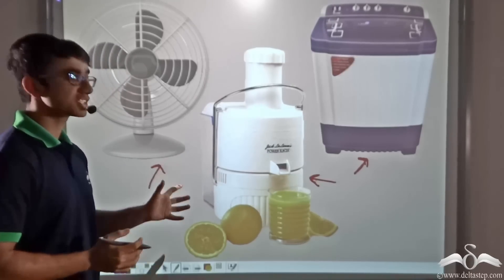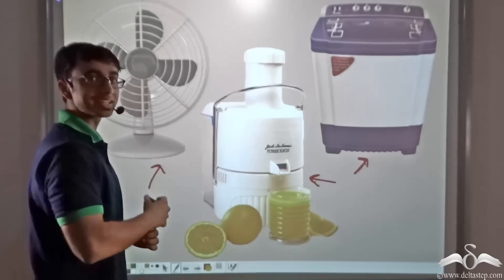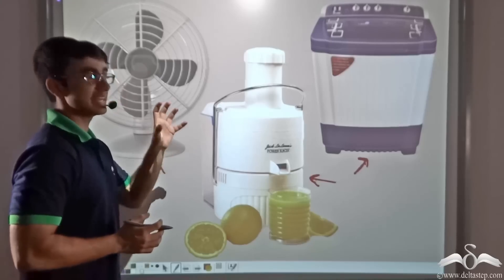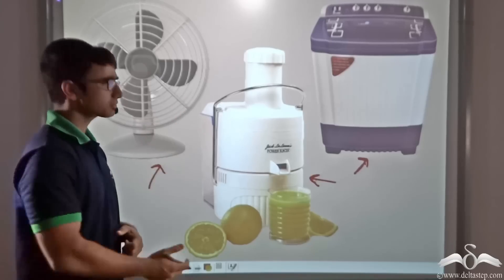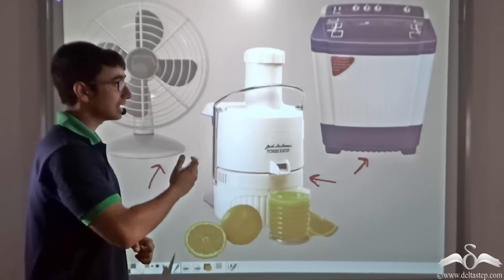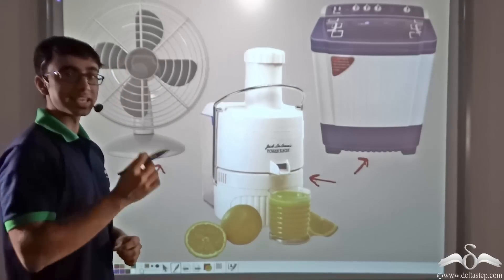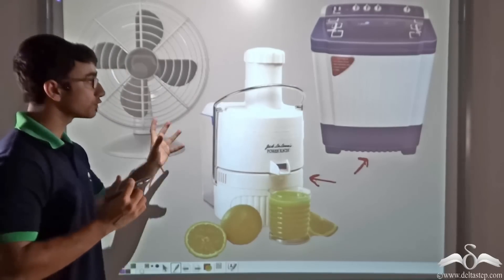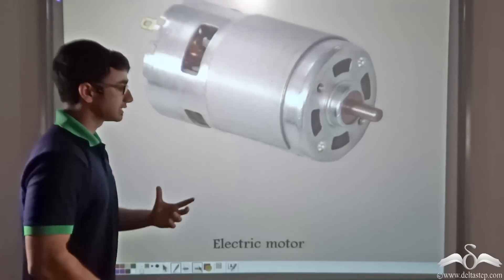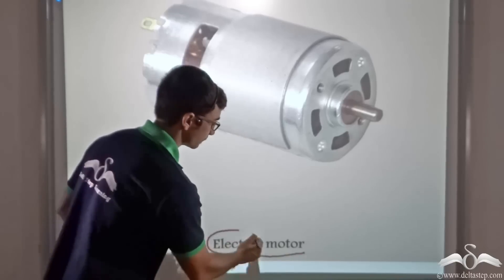Now this rotation is made possible because all of these are electrical appliances. So the moment we supply electricity, electric current flows through these appliances and the blades start rotating. Do you know the name of the device that is used for these rotating parts? Such a device is known as an electric motor.